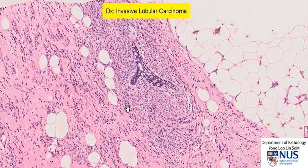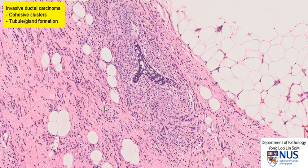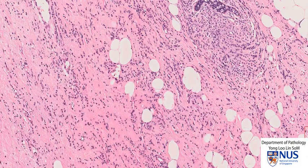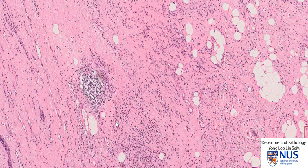Invasive lobular carcinoma is one of the two most common types of breast carcinoma, the other being invasive ductal carcinoma. Invasive ductal carcinoma tends to be more cohesive — the cells form tubules, glandular structures, or sometimes solid nests or sheets. Whereas in invasive lobular carcinoma, the cells are less cohesive, so they tend to arrange themselves in single file rows, or sometimes they're even seen singly. And this can be quite subtle, especially in a small biopsy, and sometimes when we're only catching the edge of the tumor.